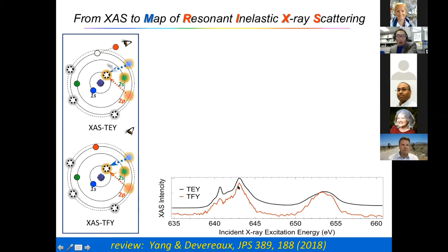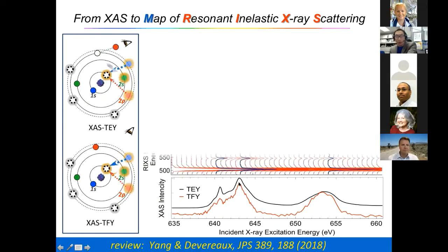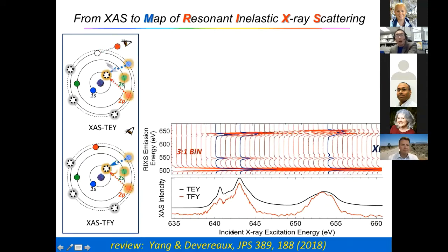If we resolve further, the red one represents the total number of outgoing photons. For example, if we have 1,000 photons, you have one data point saying your excess intensity is 1,000 photons detected. Now, what if we resolve the energies of these photons buried in the X-ray absorption spectra? At each incident energy point, we resolve the energy of the outgoing photon — this axis is the emitted photon energy, we call it emission energy.